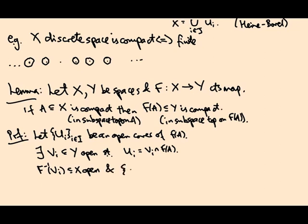And if I intersect them with A, let's say A intersect f^{-1}(V_i) as i ranges over I, this is now an open cover of A in the subspace topology.